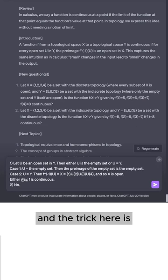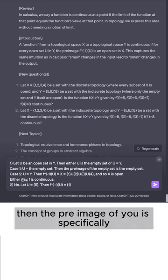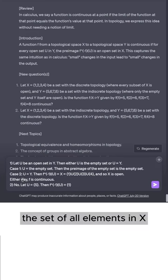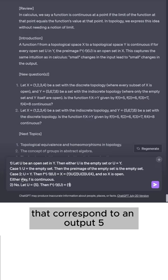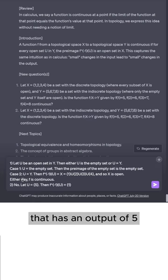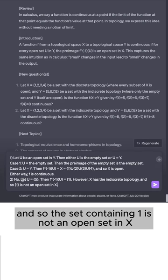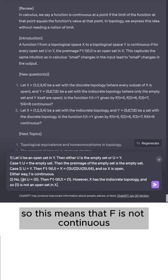Well, the answer is no. And the trick here is to let u be the set containing the element 5. Then the pre-image of u is specifically the set of all elements in x that correspond to an output 5. And there's only one element in my domain that has an output of 5, which is 1. However, x has the indiscreet topology, and so the set containing 1 is not an open set in x. So this means that f is not continuous.